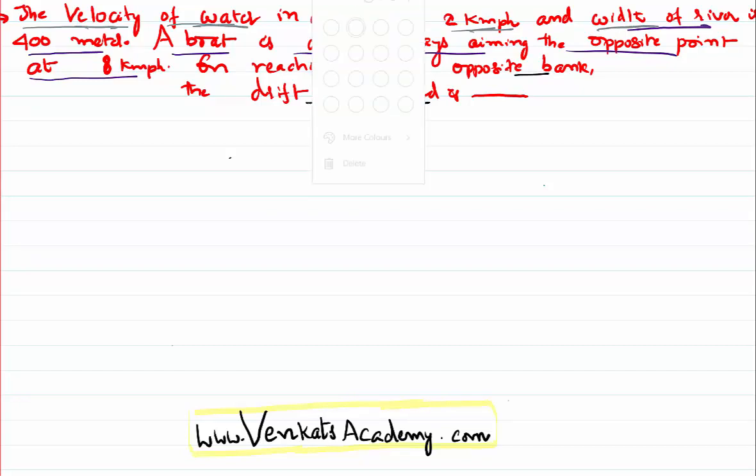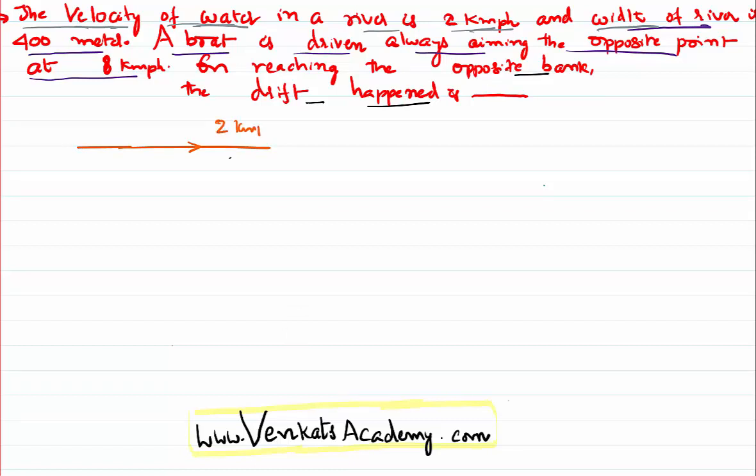Let us try analyzing that point first. This is how the water in a river is passing with a velocity of 2 km per hour and the river is having a certain width.